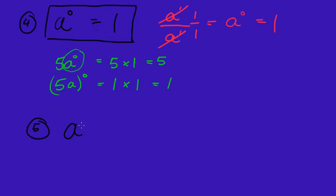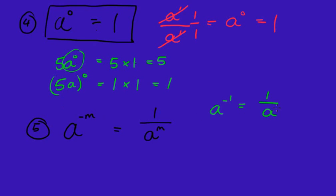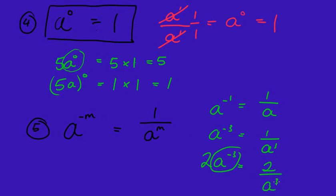Rule 5: a to the power of negative m. Whenever you have a negative index, that automatically means 1 over — it's the reciprocal — so it becomes 1 over a to the power of m. For example, a to the negative 1 is simply 1 over a; a to the negative 3 is 1 over a to the power of 3. However, 2a to the negative 3 — note the negative 3 is only working on the a — so you get 2 over a cubed, not the reciprocal of 2.